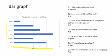Question number one: which color is least liked? The least liked color is yellow because only one child likes yellow color. Question two: how many children like pink? Six children like pink.